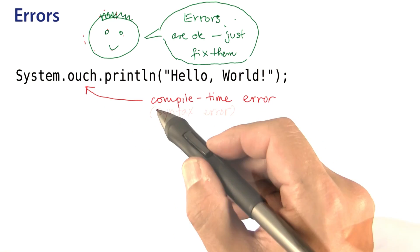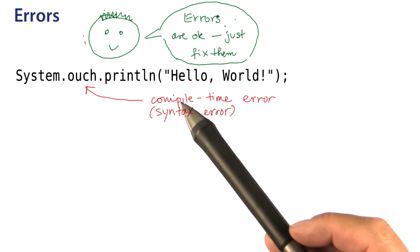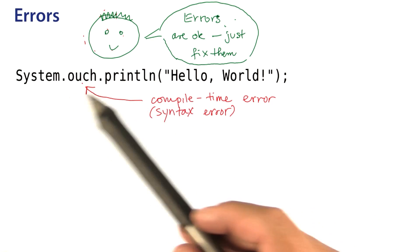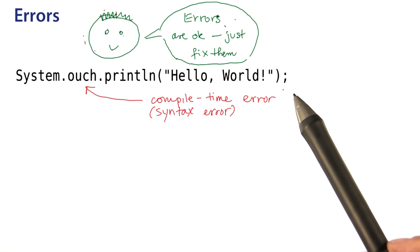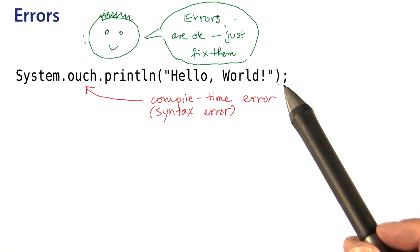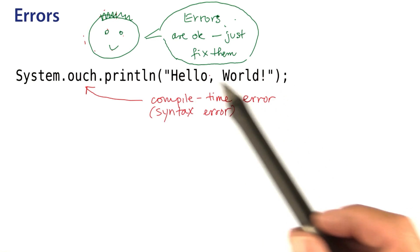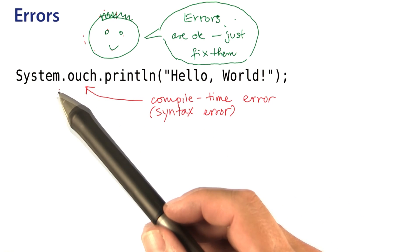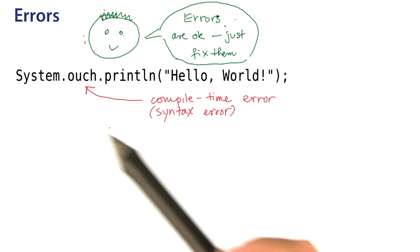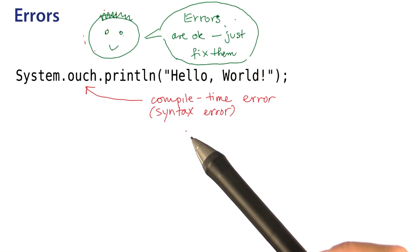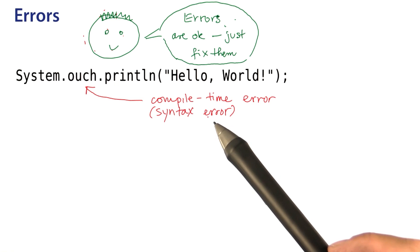Some people call it a syntax error because there's something wrong with the syntax of the statement. As you can imagine, there are lots of syntax errors you could make. You might forget the semicolon, or one of the quotation marks, or one of the dots. Anytime you do that, the compiler will complain and you just fix that particular error and recompile. It happens to the best of us.